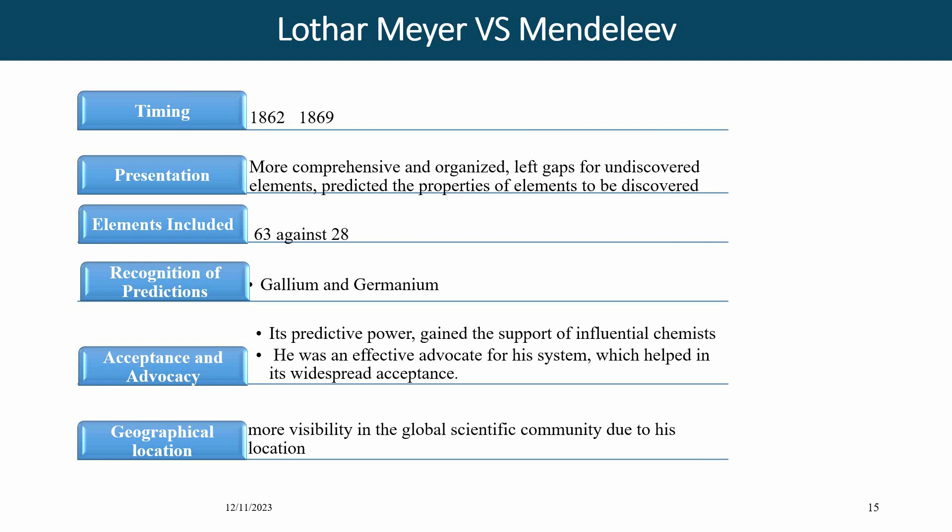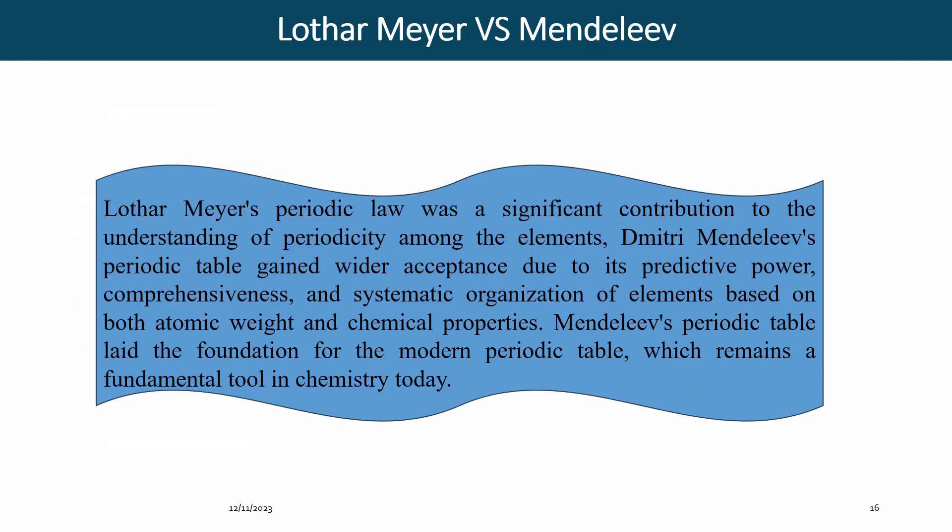The geographical location of Mendeleev was also favorable for the acceptance of his work, providing more visibility in the global scientific community. Lothar Meyer's periodic law was a significant contribution to understanding periodicity among elements, but Mendeleev's periodic table gained wider acceptance due to its predictive power, comprehensiveness, and systematic organization of elements based on both atomic weights and chemical properties. Mendeleev's periodic table laid the foundation for the modern periodic table, which remains a fundamental tool in chemistry today.